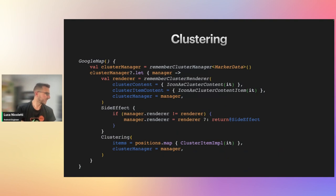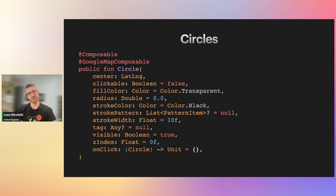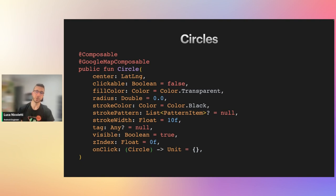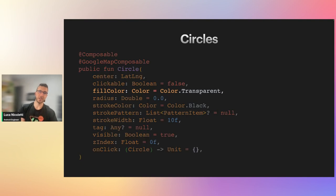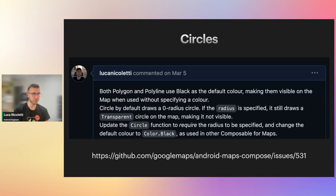Two other ways of drawing on maps are shapes: we have circles, polygons, and polylines. Circles are easy but tricky at the same time. The only required parameter is the center, which is a LatLng — that's the only one you have to specify to use the Circle composable. Unfortunately the fill color defaults to transparent and the radius defaults to zero, so if you use the Circle composable by just providing its center, nothing will be drawn on the map. I opened a feature request on the library to require the radius parameter.